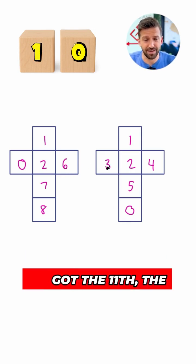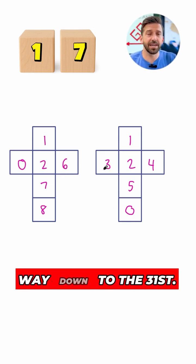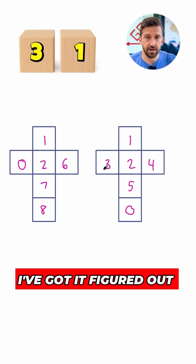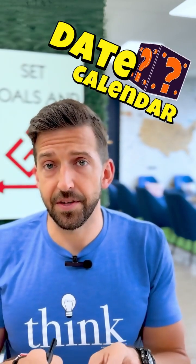I've got the 10th, multiple different ways. I've got the 11th, the 12th, the 13th, all the way down to the 31st. I've got it figured out using this solution. So that's how you make the date cube calendar.